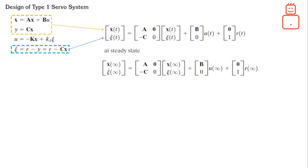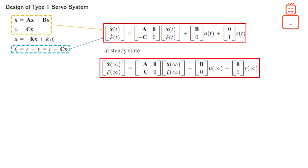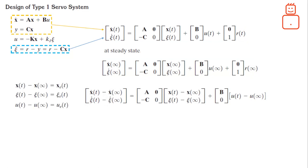At this point, we need to remind ourselves that R of T is just a step input, thus, R at infinity is basically equals to R. Now, if we subtracted both shown dynamics, we can obtain the following relation. And if we define the following new states, then our last relation can also be written as following. And if we go back to our assumption regarding the structure of the control at beginning of the video, we can say that U sub E of T is given as shown.